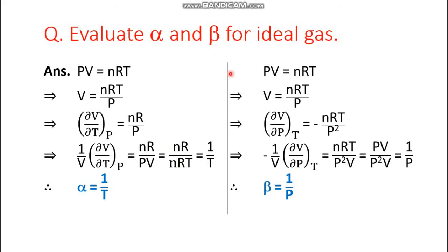Now let's find the value of beta. Here V is again on the left-hand side, but temperature is now kept constant while pressure becomes the variable. Volume is differentiated with respect to pressure at constant temperature. Differentiating nRT/P with respect to P gives minus nRT/P², since differentiating 1/P gives −1/P² and nRT are all constant.